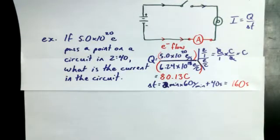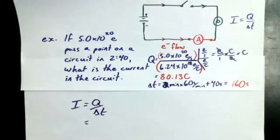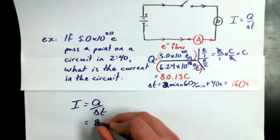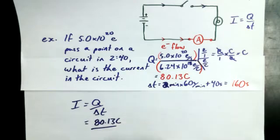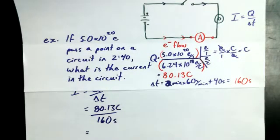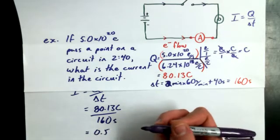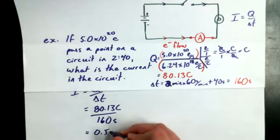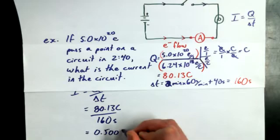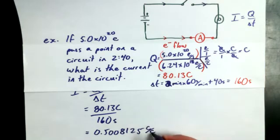So we've got our current calculation we're going to do. We've got current equals Q over delta T, and we found Q and delta T, so we're away to the races with 80.13 coulombs divided by 160 seconds, and we end up getting a current of 0.508. 0.501 also 8125, actually. Coulombs per second, and what would be a nicer way to write it than coulombs per second?